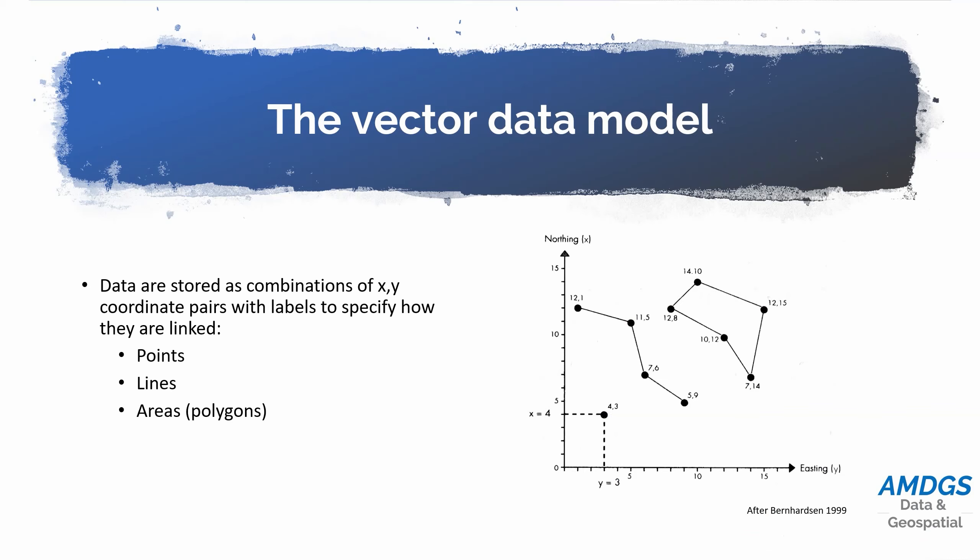Vector data is a bit different. Rather than being made up of a continuous grid, it's made up of essentially a series of points, each point represented by coordinates. The basic building block of vector data is a point represented by a pair of coordinates, x and y. We can then use those points to create lines by having points connected together. And if we want to create an area, we simply link the last point back to the first to create an enclosed area or polygon.